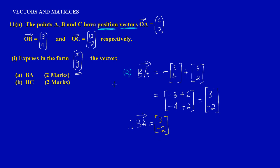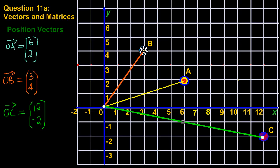I can even prove that on the graph. BA equals 3, negative 2 means if I'm moving from B to A, I move positive 3 on the X axis and negative 2 on the Y axis. So starting at B, I go 1, 2, 3 on the X, and 1, 2 down — and that lands me exactly at A. It's pretty much that easy.